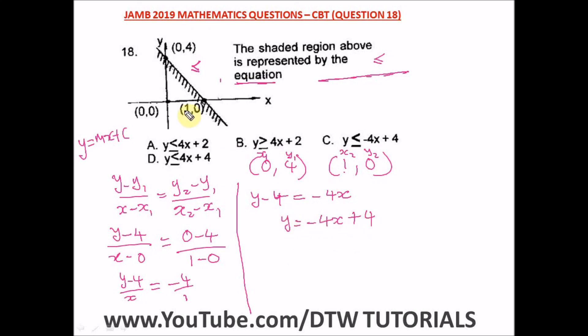Remember this is an inequality graph, so putting in our inequality sign, we have y is less than or equal to minus 4x plus 4. This is our answer and the right option here is option C.